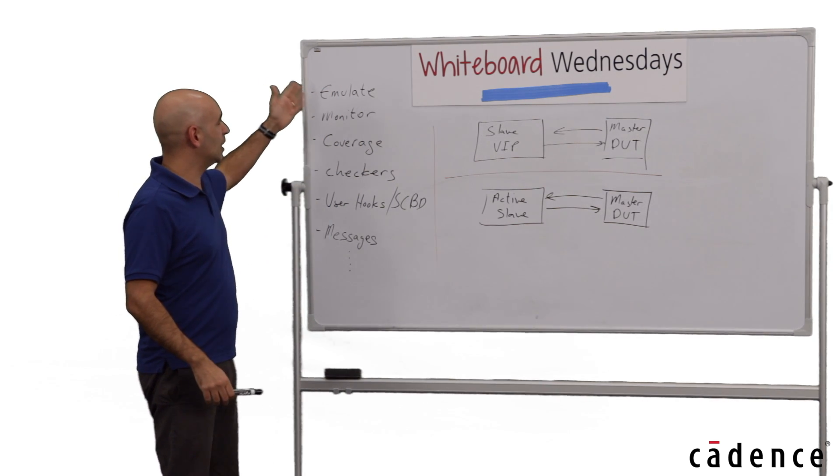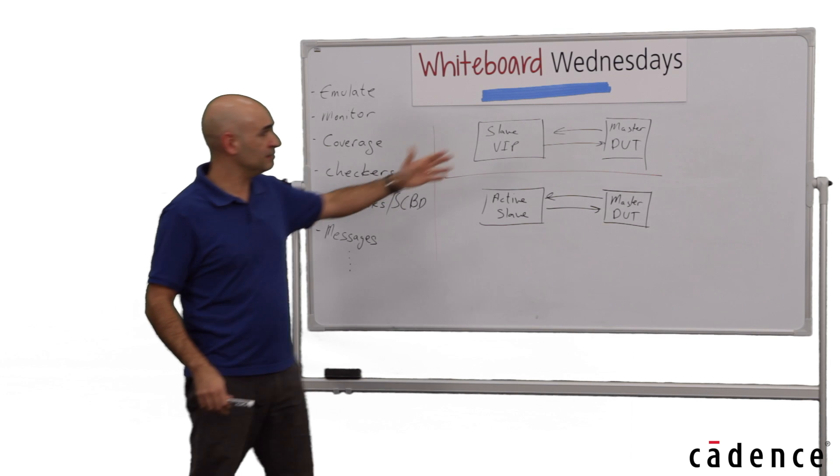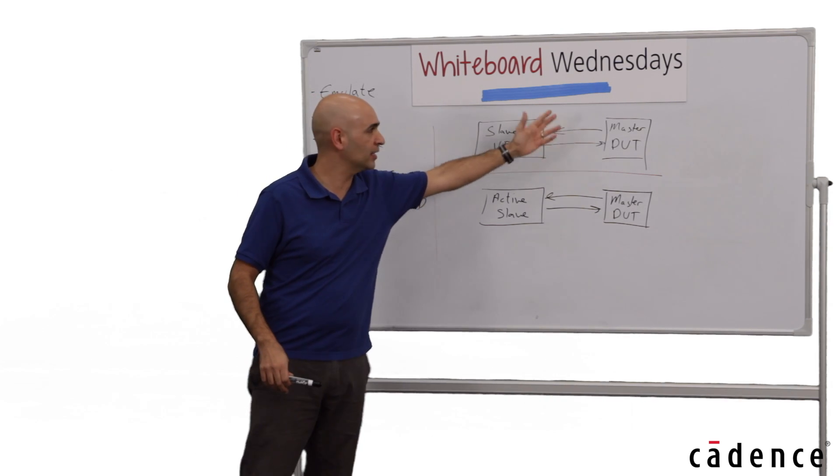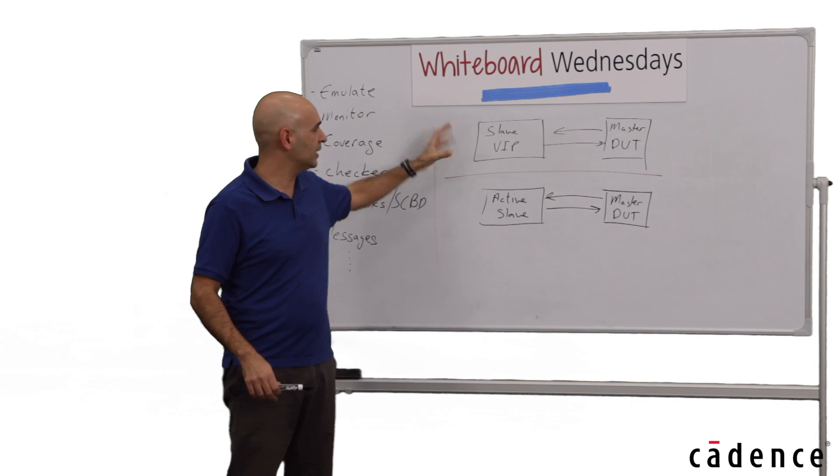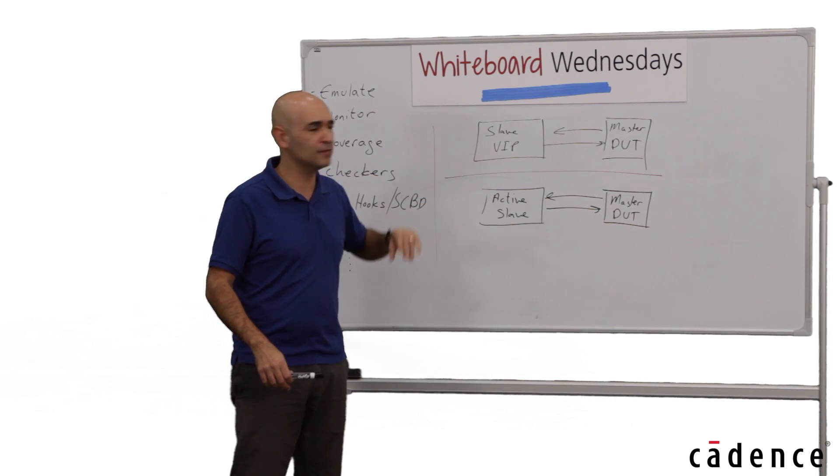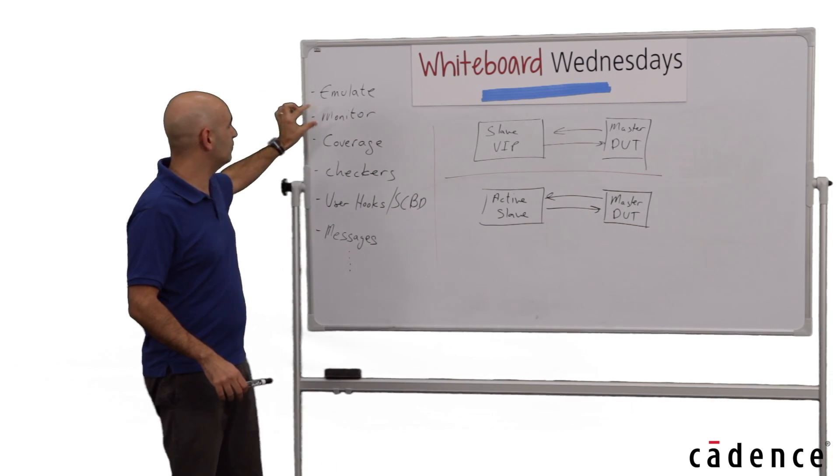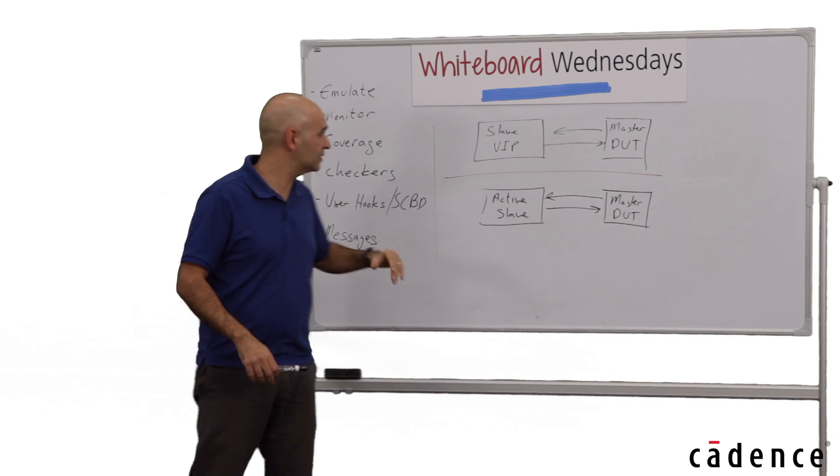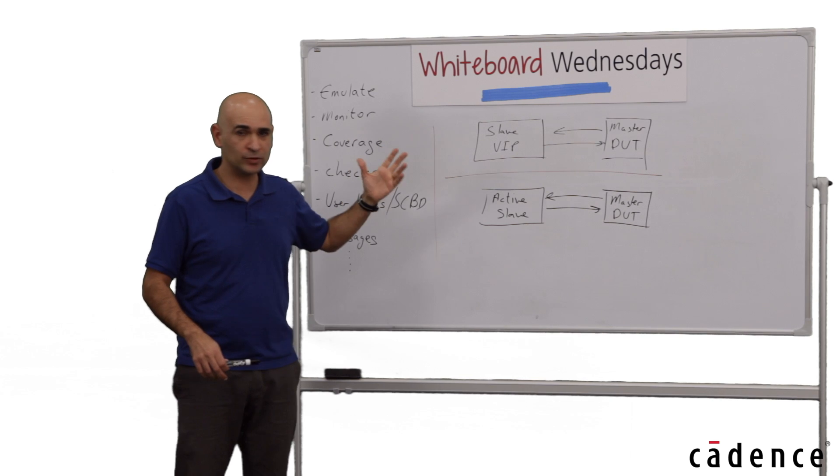So let's take a quick look at the functionality that the VIP user needs from the VIP model. It needs the VIP to be able to emulate a device activity. In this example, the verification engineer tries to verify a master DUT and he needs the VIP to emulate the slave activity. He needs the VIP to be able to monitor the device under test and make sure that it behaves according to the protocol.